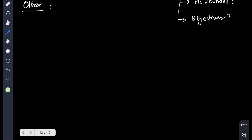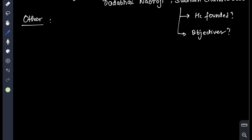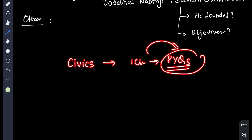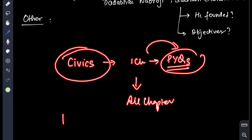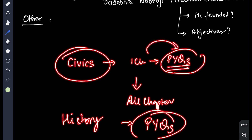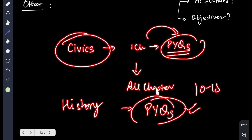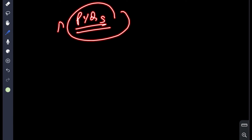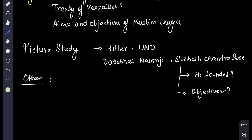So, to summarize: start with civics, complete one chapter, then move to previous year questions, and gradually complete all chapters. Then go to history. On the third day, go to PYQs. For 10–15 years of PYQs, many websites — like A-plus Top Pair — will give you PYQs with answers. Refer to those. All the best and bye!